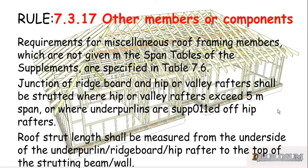Rule 7.3.17 covers other members or components. It says that the requirements for miscellaneous roof framing members which are not given in the span tables of the supplements are specified in table 7.6. Junctions of ridge board and hip and valley rafters shall be strutted where the valley exceeds 5 meters. Ridge strut length shall be measured from the underside of the under purlin, ridge board, or hip rafter to the top of the strutting beam or wall.